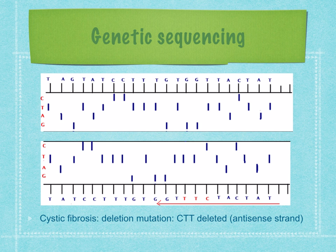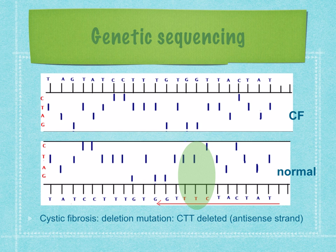Here we have two genetic sequences of the antisense strands of DNA — one of a person with cystic fibrosis and one of a normal person. Have a look at these sequences and try to decide which is which. The bottom sequence represents a person who doesn't have cystic fibrosis and the top sequence represents a person who does have cystic fibrosis. Please make sure you check this is the correct way around in your notes.